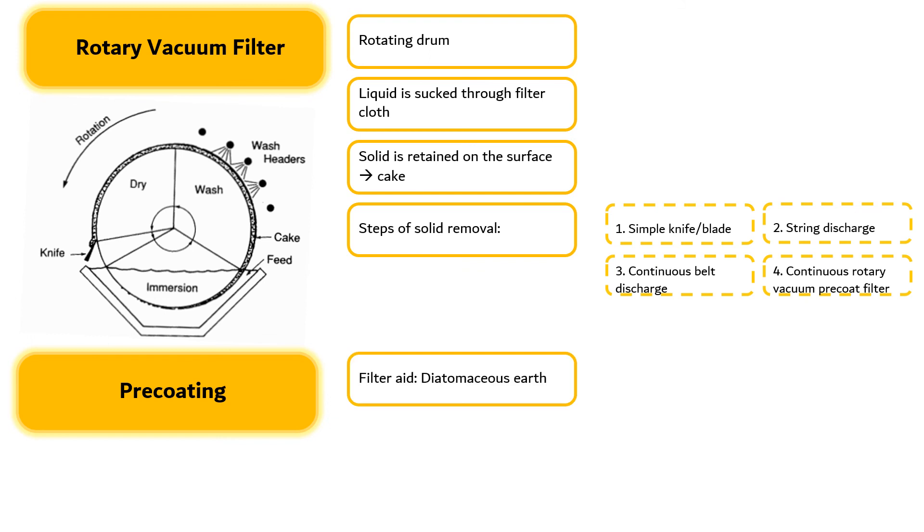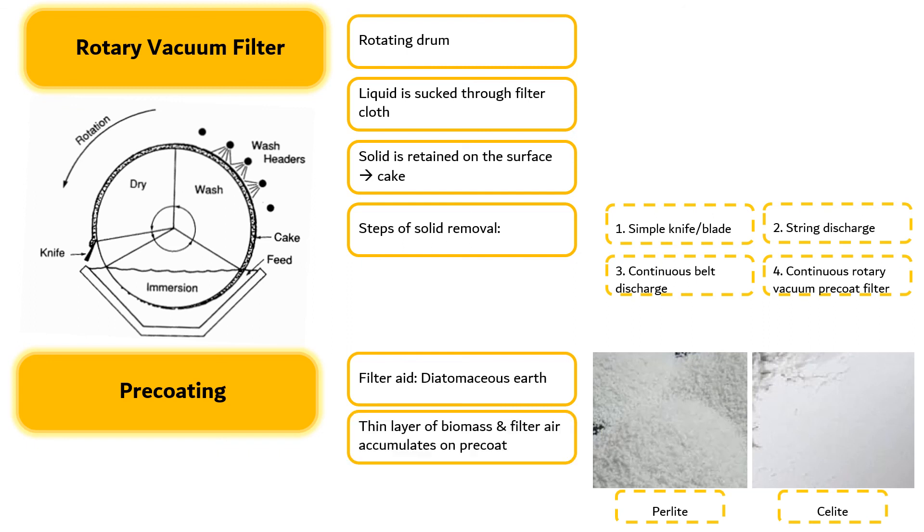Pre-coating is the application of a filter aid such as perlite or celite or other inert microporous material to the filter medium. This layer is often thick. As the drum rotates, a thin layer of biomass and filter aid accumulates on the surface of the pre-coat and continues to build during the cake formation of the cycle. The cake is washed and dewatered, and then slowly advancing blades shave off a thin layer of accumulated biomass, exposing a fresh surface of pre-coat for the next cycle.